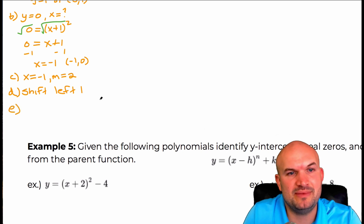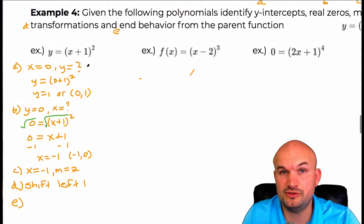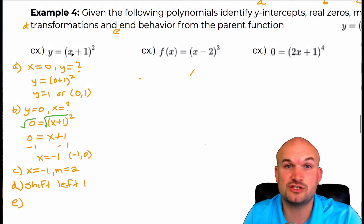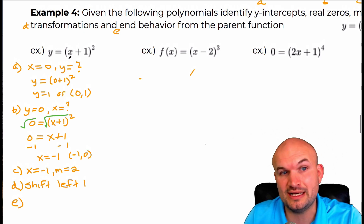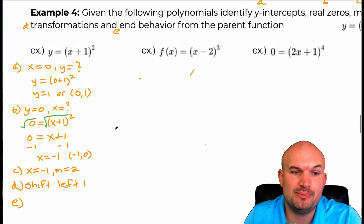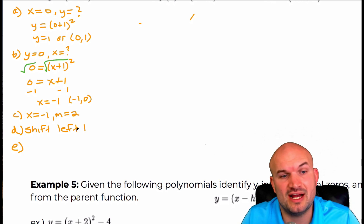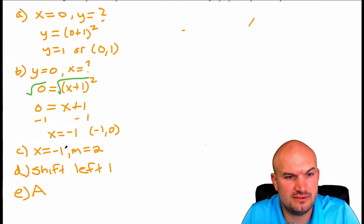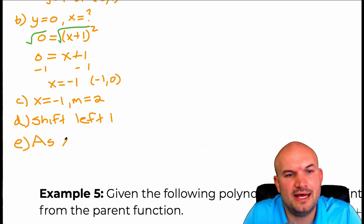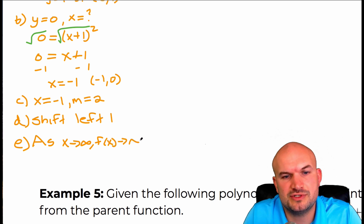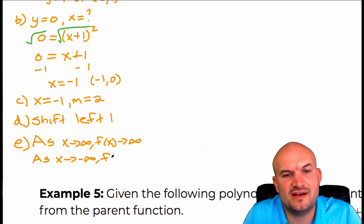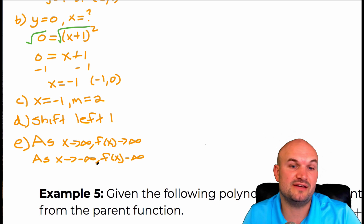Last but not least is the end behavior. If we were to expand this, you would see that this gives you x squared — an even degree — with a positive leading coefficient of one. So the graph is going to rise left and rise right. In more traditional mathematical notation: as x approaches infinity, f of x approaches infinity. And as x approaches negative infinity, f of x approaches infinity.